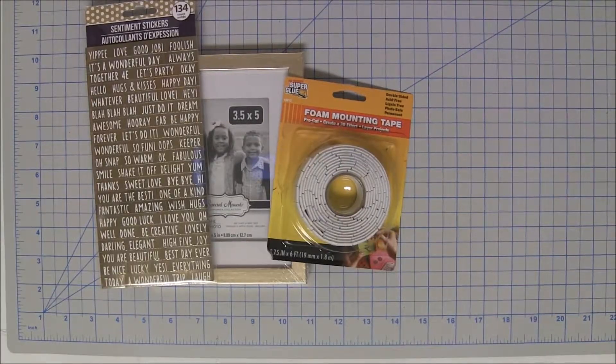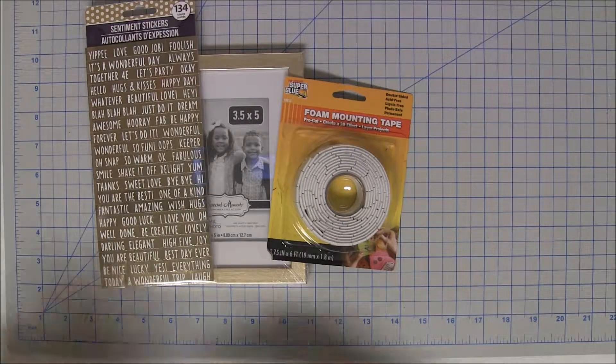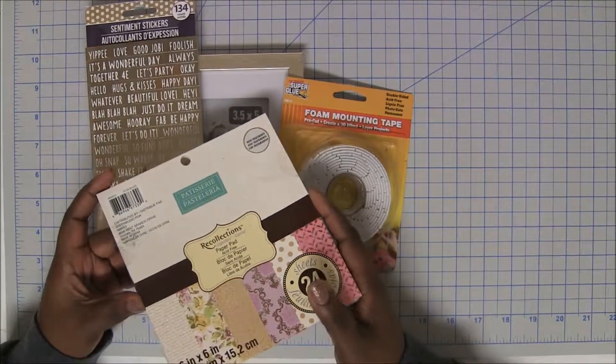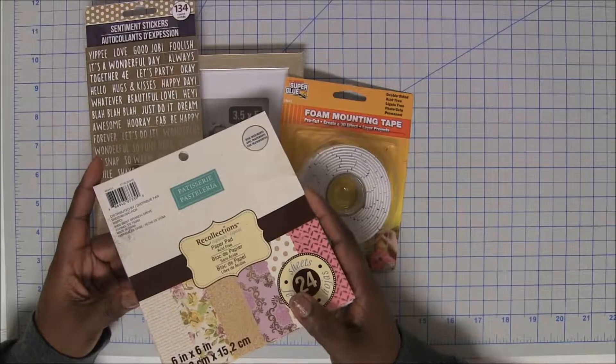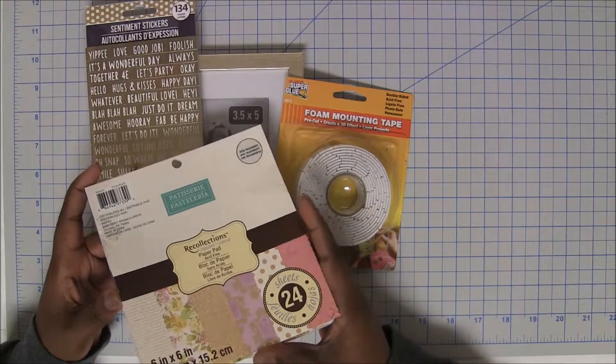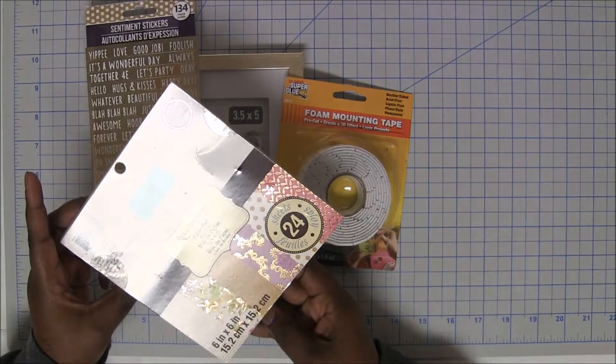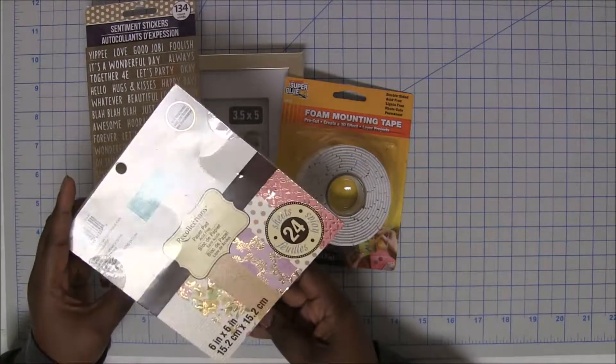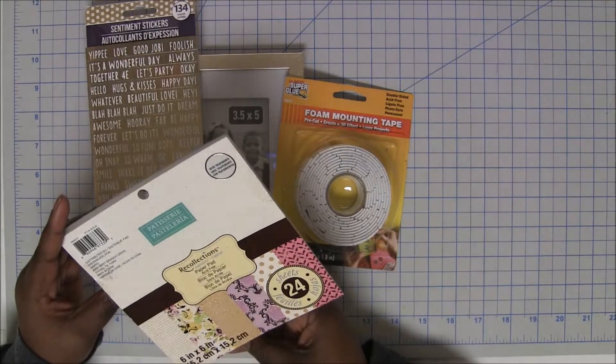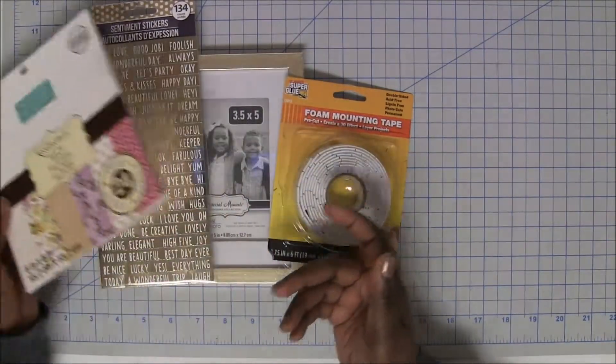And then the last thing that I'm going to use, I did not purchase this from the Dollar Store because I already had it in my collection, but I have been in the Dollar Store and I've noticed lately that they do have paper pads with different patterned paper. You could also use a solid sheet of paper or I've seen people take calendars and cut them up to use just an image. So I'm going to use this patterned paper pack from Recollections that I got from Michaels. This is the patisserie paper pad. All right, so these are the supplies, that's all.